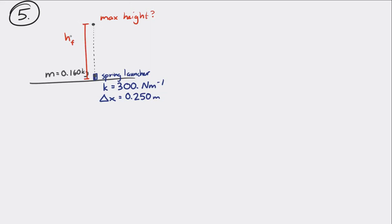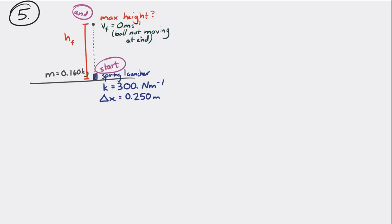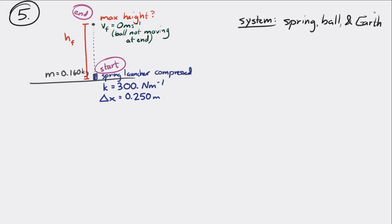It begins with the ball bearing and the compressed spring. At the maximum height, the ball is not going to be moving — the ball has a speed equal to zero. We want to know the height at that moment. If we make the system the spring, the ball, and the Earth, then it's a closed system. Other than the spring, the ball, and the Earth, no energy enters or leaves.